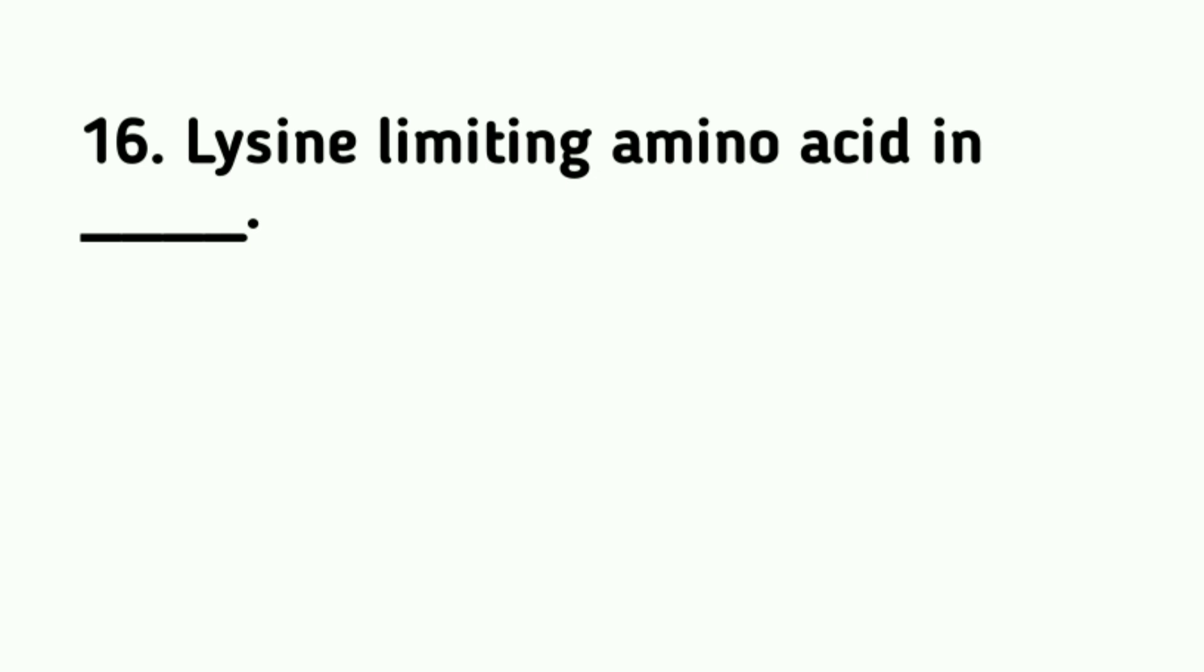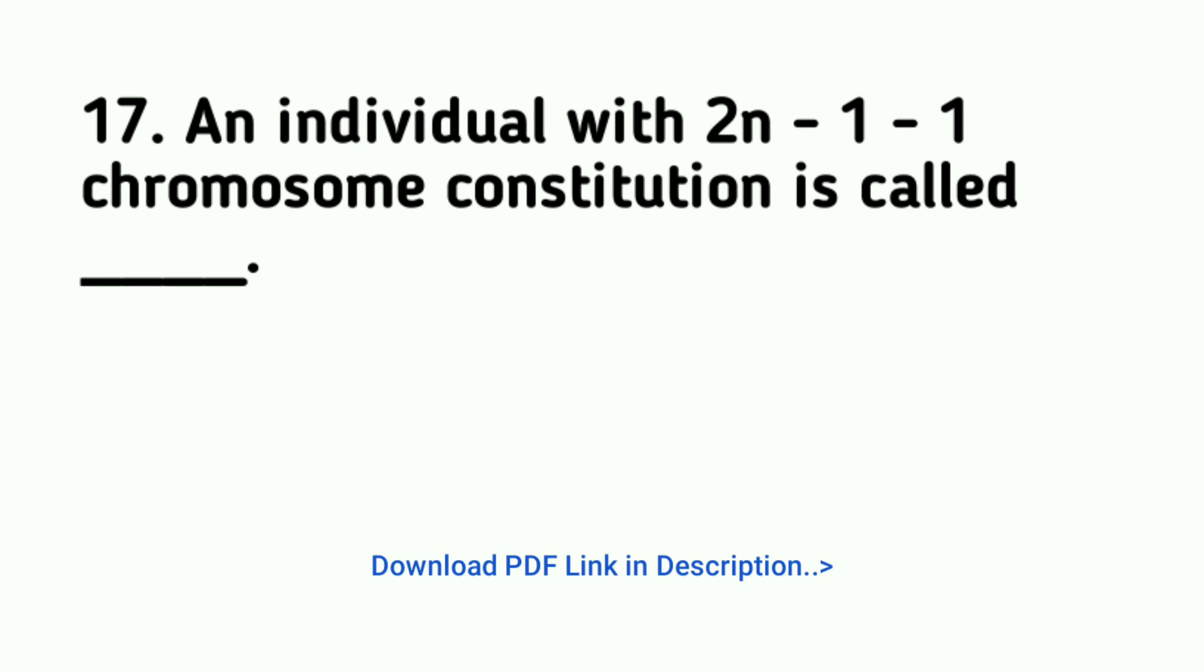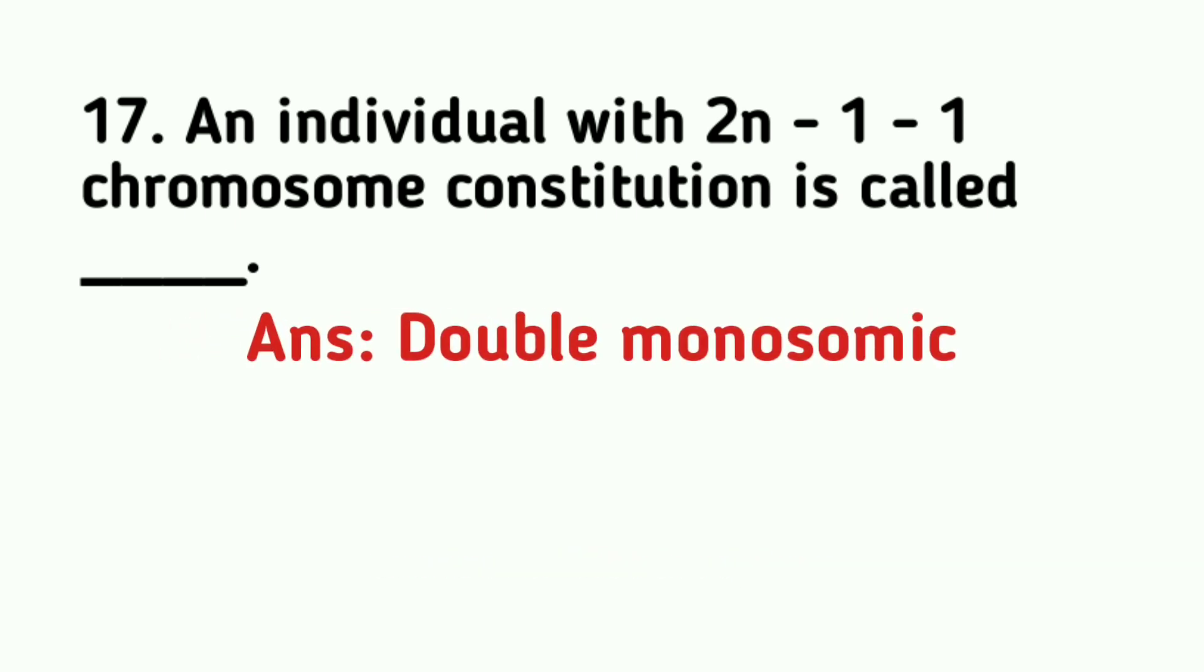Lysine is limiting amino acid in cereals. An individual with 2n-1-1 chromosome constitution is called double monosomic.